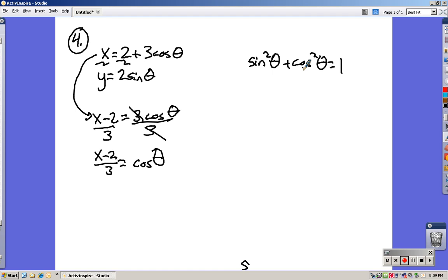But I want to substitute in cosine squared. So I'll square both sides. And notice if I do that, the top, I'm not going to multiply it out. I'm just going to leave it as x minus two squared over the denominator, the bottom. I'll square it, nine. So I know what cosine squared theta is.